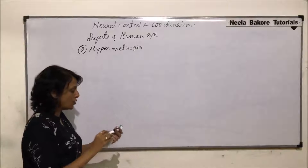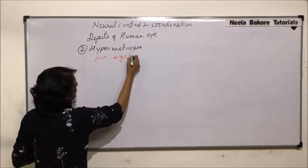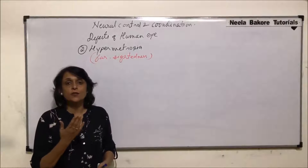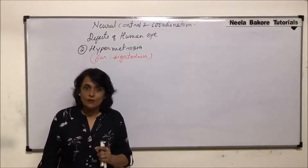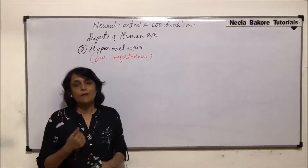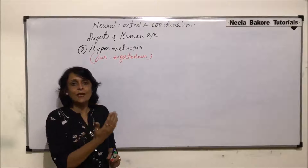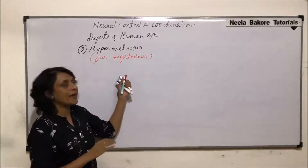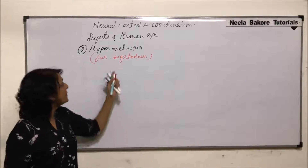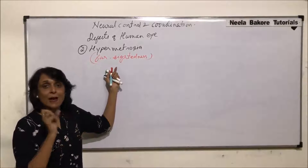The second defect is hypermetropia. Hypermetropia is also known as far-sightedness. In this, the person is able to see distant objects but things closer are not clearly visible. A similar problem is seen as a result of aging — when older people try to read messages on their phone or newspapers, they keep the object far from their eyes. That is similar but due to aging; we will take that up later.